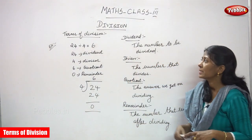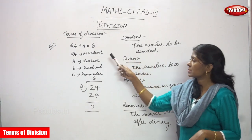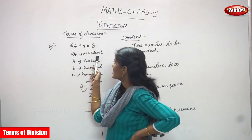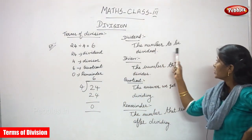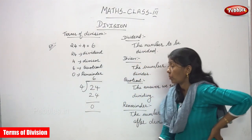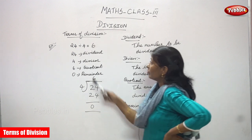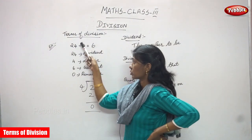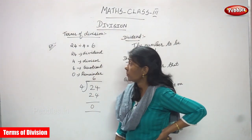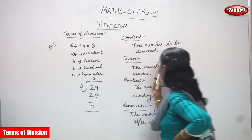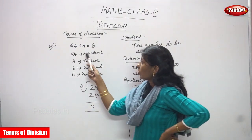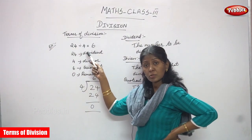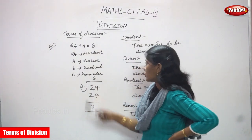Let's see the terms of division using this example. The dividend is 24 — that is the number to be divided. The divisor is 4 — that is the number that divides. So 4 is the divisor. The quotient is 6. Dividend means the number to be divided, and divisor means the number that divides.